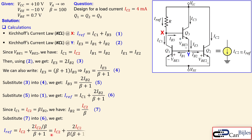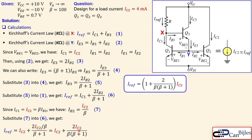Working this out, we get IREF equals IC2 times (1 + 2 / (beta · (beta + 1))). This expression is very similar to the simple current mirror, except the error term is reduced by a factor of beta — that is exactly why this is called the beta helper. Since beta is typically 100, the factor beta·(beta+1) equals 10100, making that term very small and IREF very close to IC2.